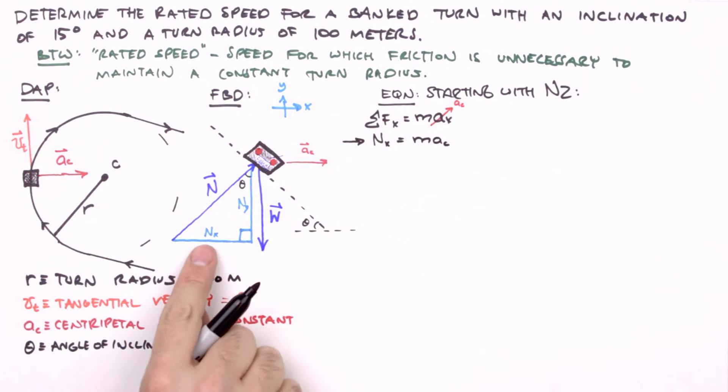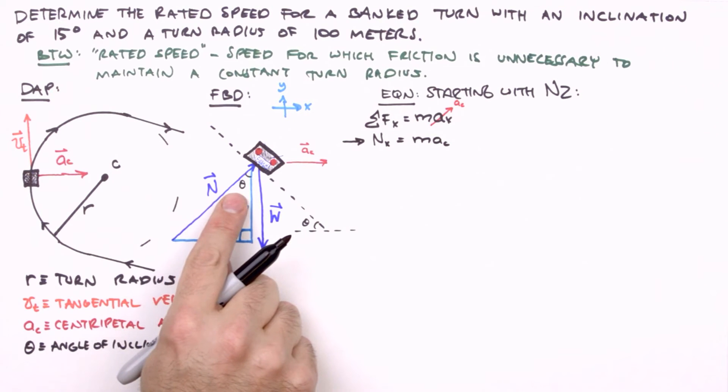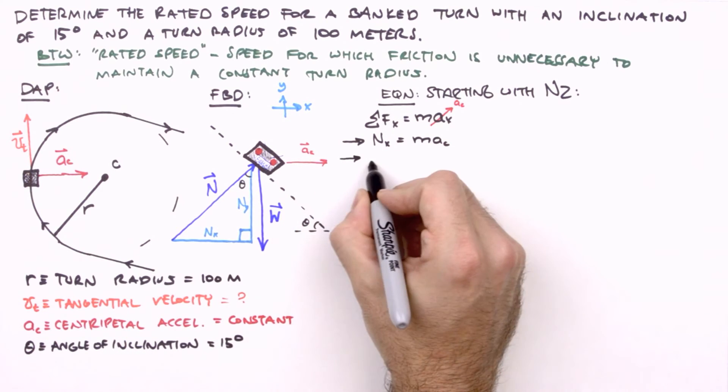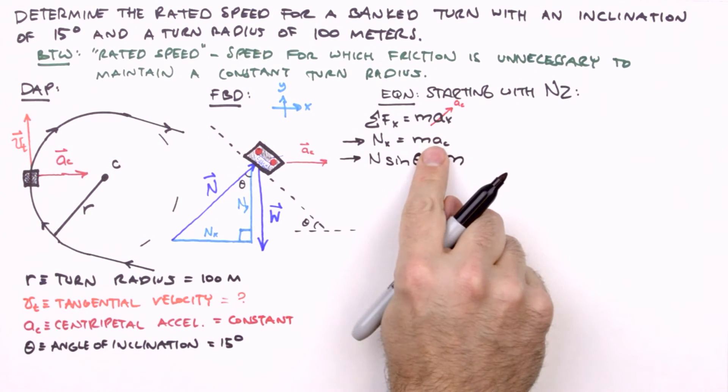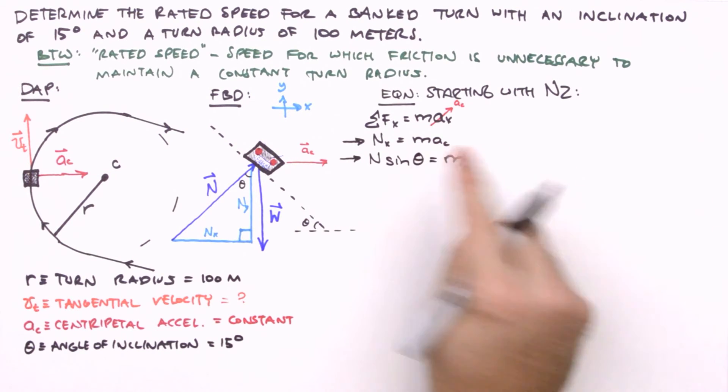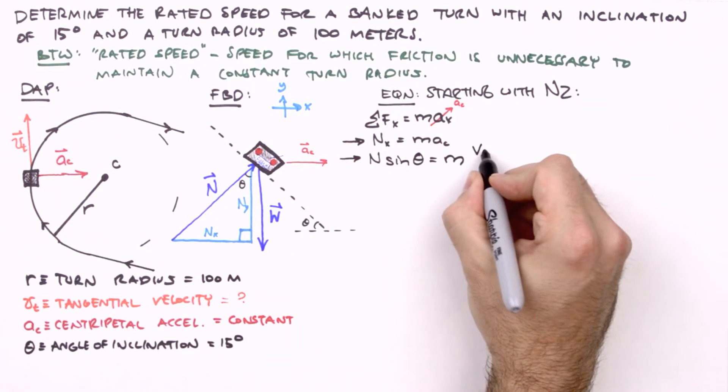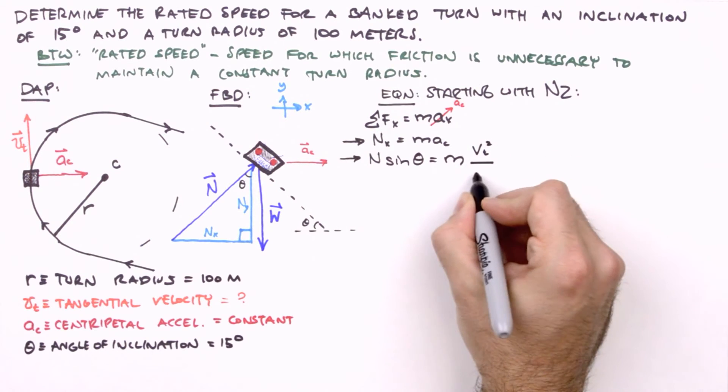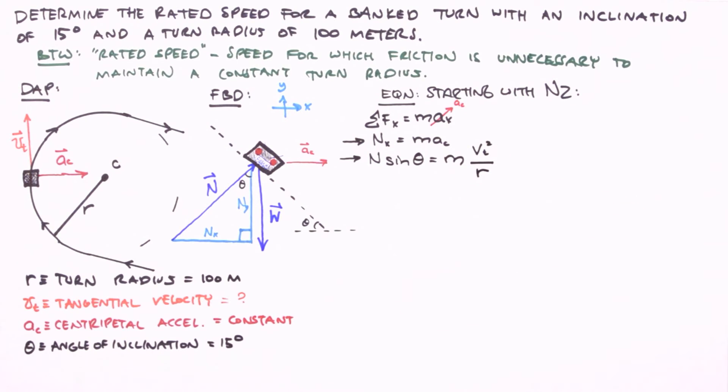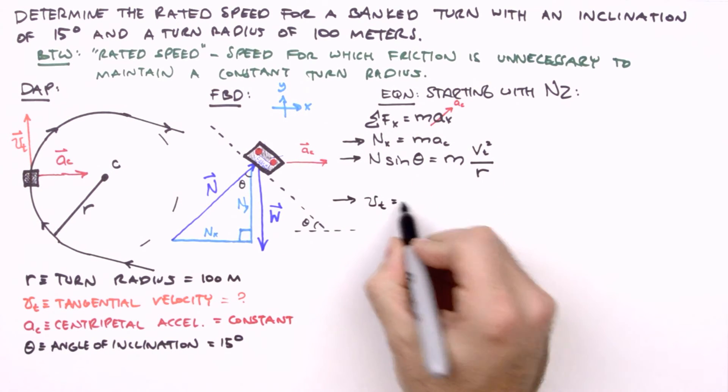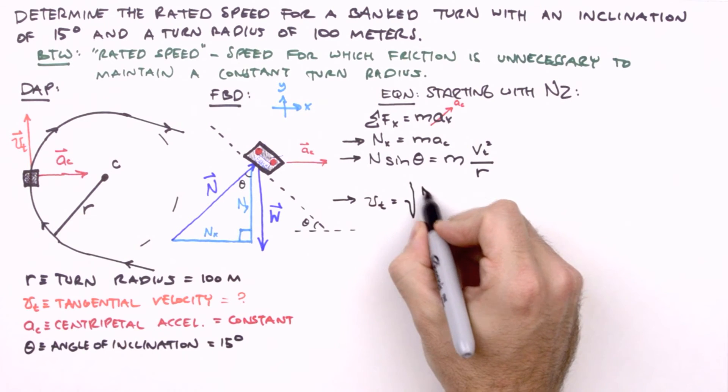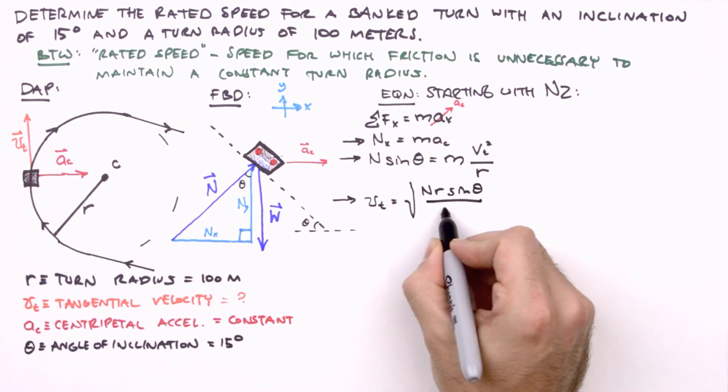Now, trigonometrically, n sub x is related to n by a factor of sine theta. So we can write n sine theta equals m times, and we'll write the mathematical definition of centripetal acceleration here, the square of the tangential velocity, v sub t, over the turn radius, r. Solving for v sub t, we get v sub t equals the square root of n r sine theta divided by m.